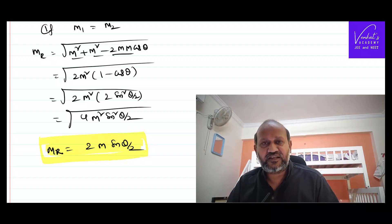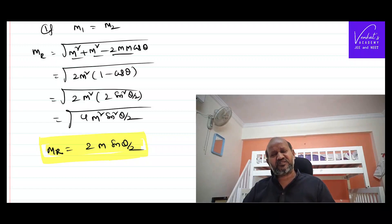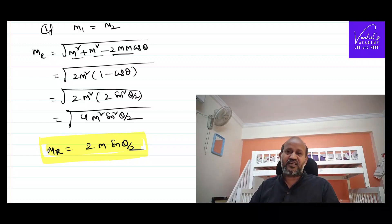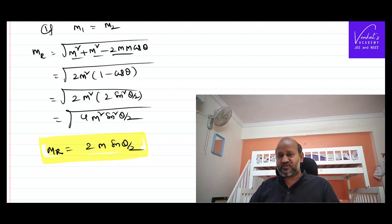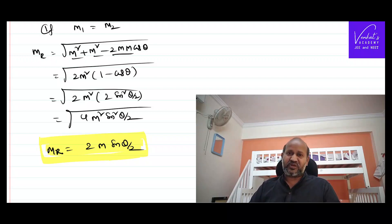This is how we can find the resultant of two magnetic moment vectors with different angles, however they are in contact. We identify their directions, apply the parallelogram law, and find the resultant magnitude as well as direction. That covers the resultant magnetic moment of two bar magnets. Thank you for watching.